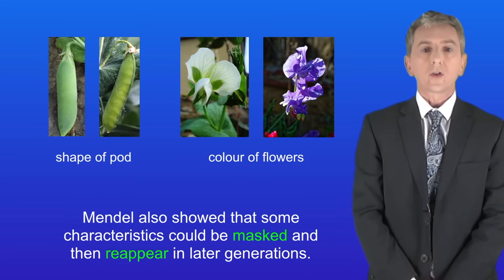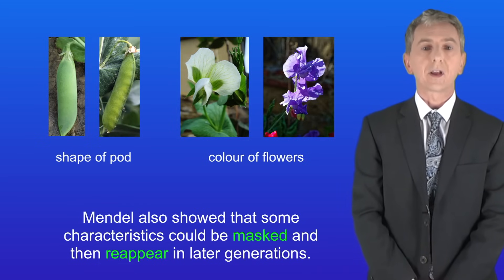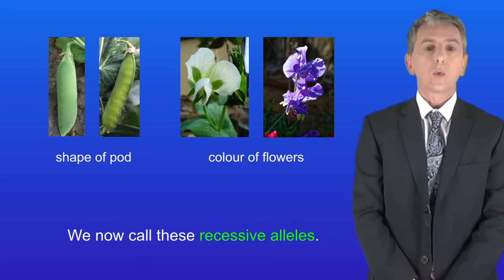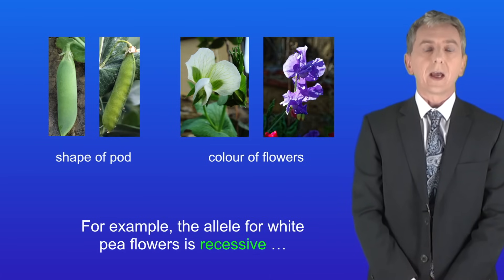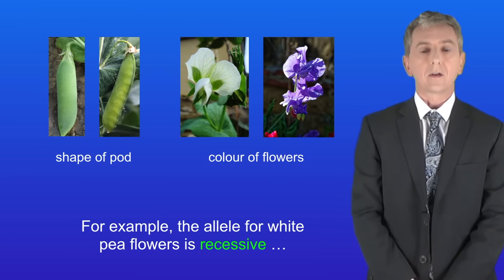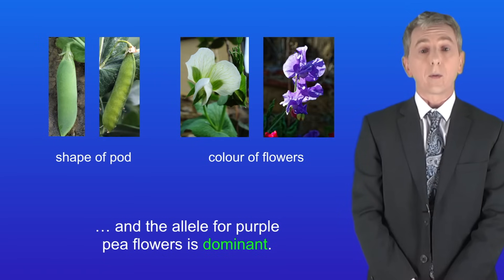Mendel also showed that some characteristics could be masked and then reappear in later generations. We now call these recessive alleles. For example the allele for white pea flowers is recessive and the allele for purple pea flowers is dominant.